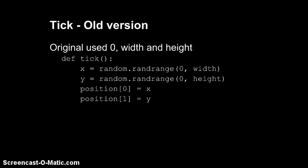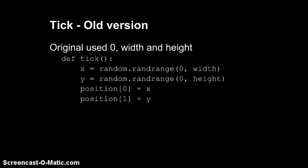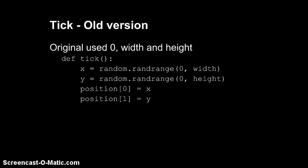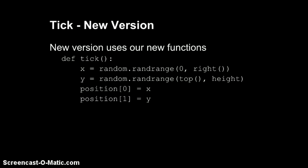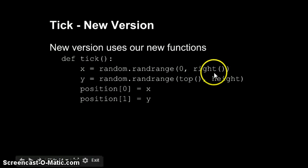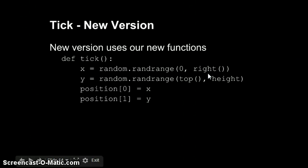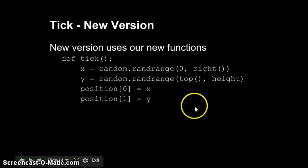So now we look at tick. Tick calculates a random point at which the text will be drawn. We're looking at the original from the lecture. The old version of tick uses zero and the width for the range of the x value, and zero and the height for the range of the y value. This is clearly not taking into account the size. In the new version of tick, we use the result of calling right as the maximum for the range used to determine x, and we use the result of calling top as the minimum value for the range used to determine y. Everything else remains the same.